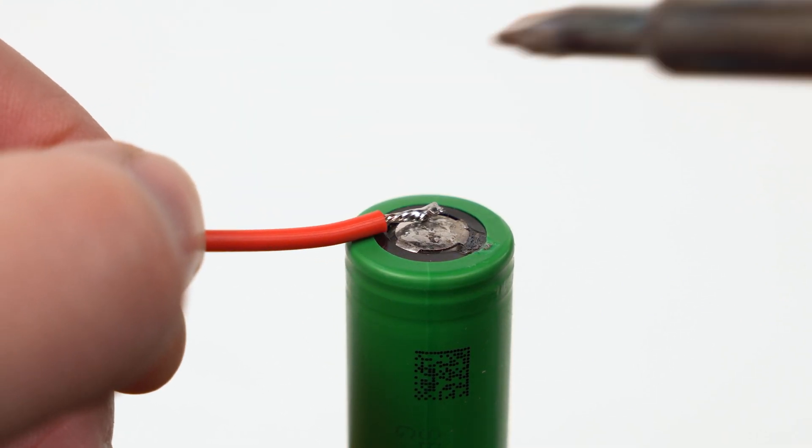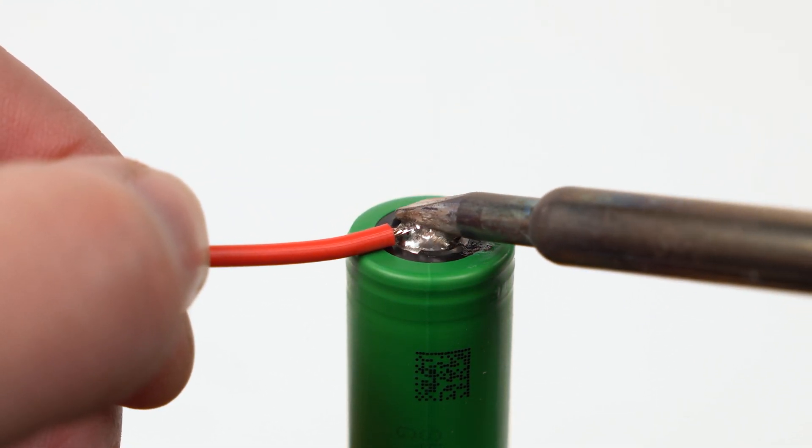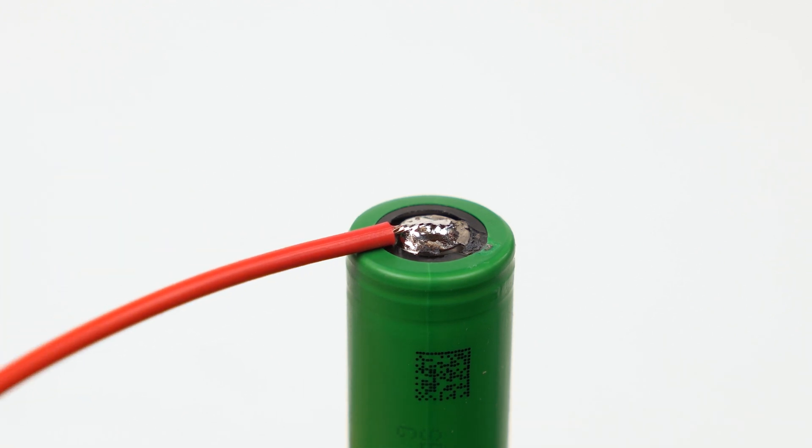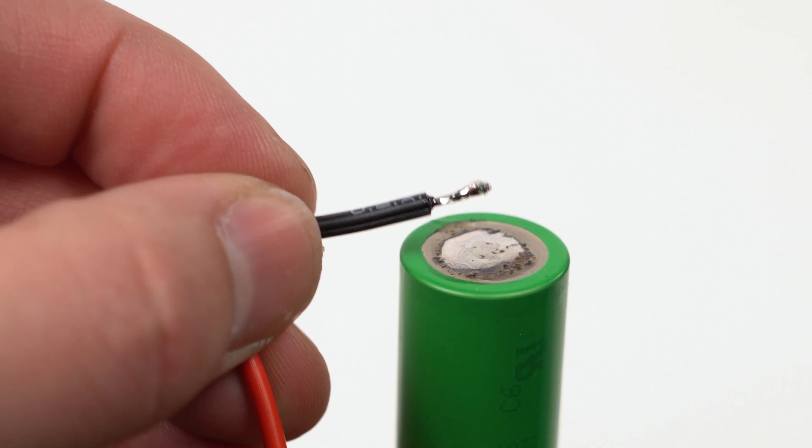Solder the red wire to the positive end of your battery. Solder the black wire to the negative end of your battery.